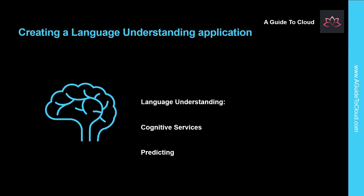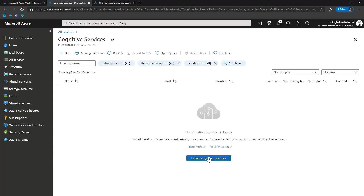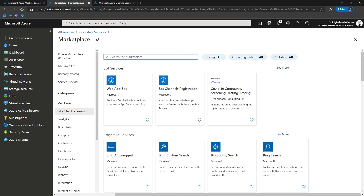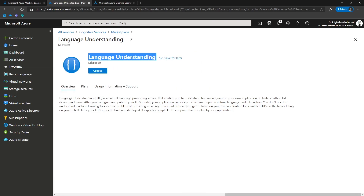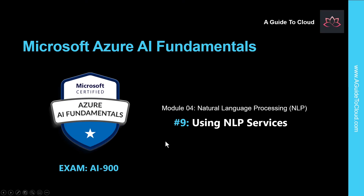Creating a language understanding application consists of two main tasks. First, you must define entities, intents, and utterances with which to train the language model — referred to as authoring the model. Then, you must publish the model so that client applications can use it for intent and entity prediction based on user input. For each of the authoring and prediction tasks, you need a resource in your Azure subscription: either a language understanding resource or a cognitive services resource. On the Azure portal, you can find language understanding under Cognitive Services, where you can create a dedicated resource that can be either an authoring or a prediction resource. That concludes the first lesson in natural language processing. In the next video, we are going to learn about using NLP services.